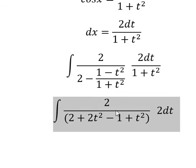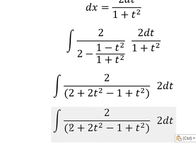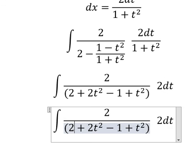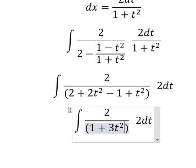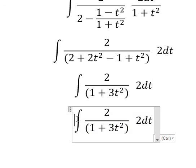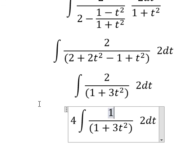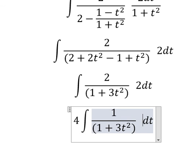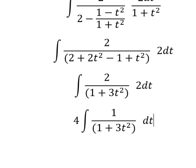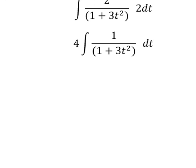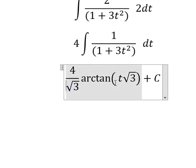Next, 2 minus 1 we have 1. Two t squared plus t squared, we have 3t squared. So 2 times 2, we have 4.